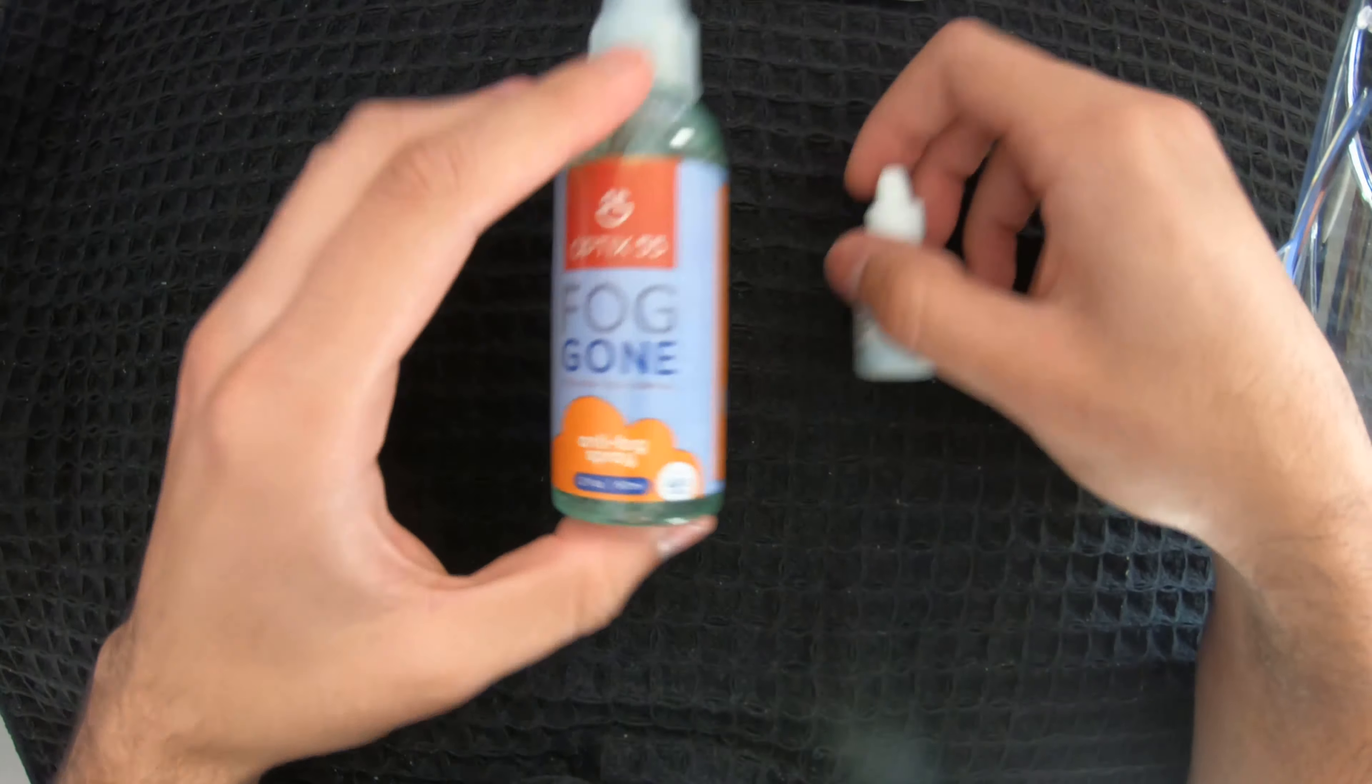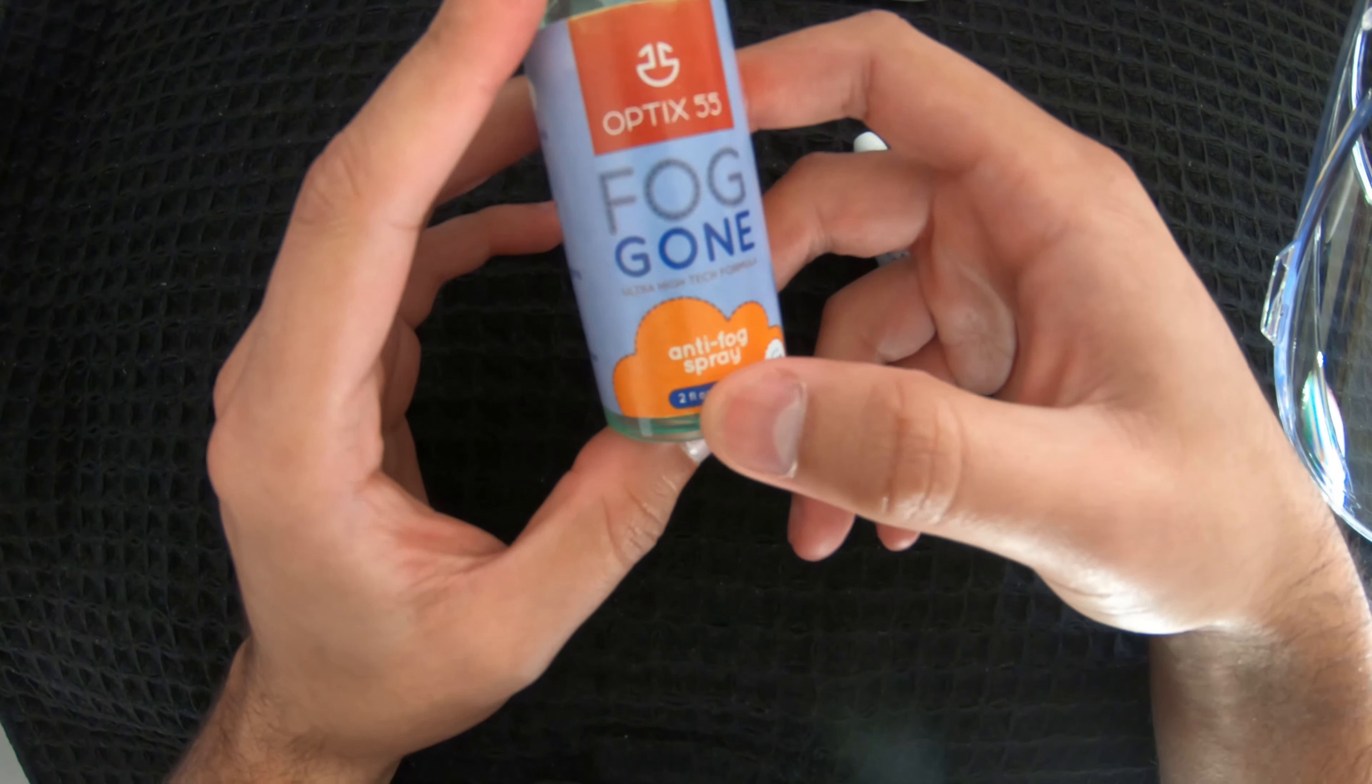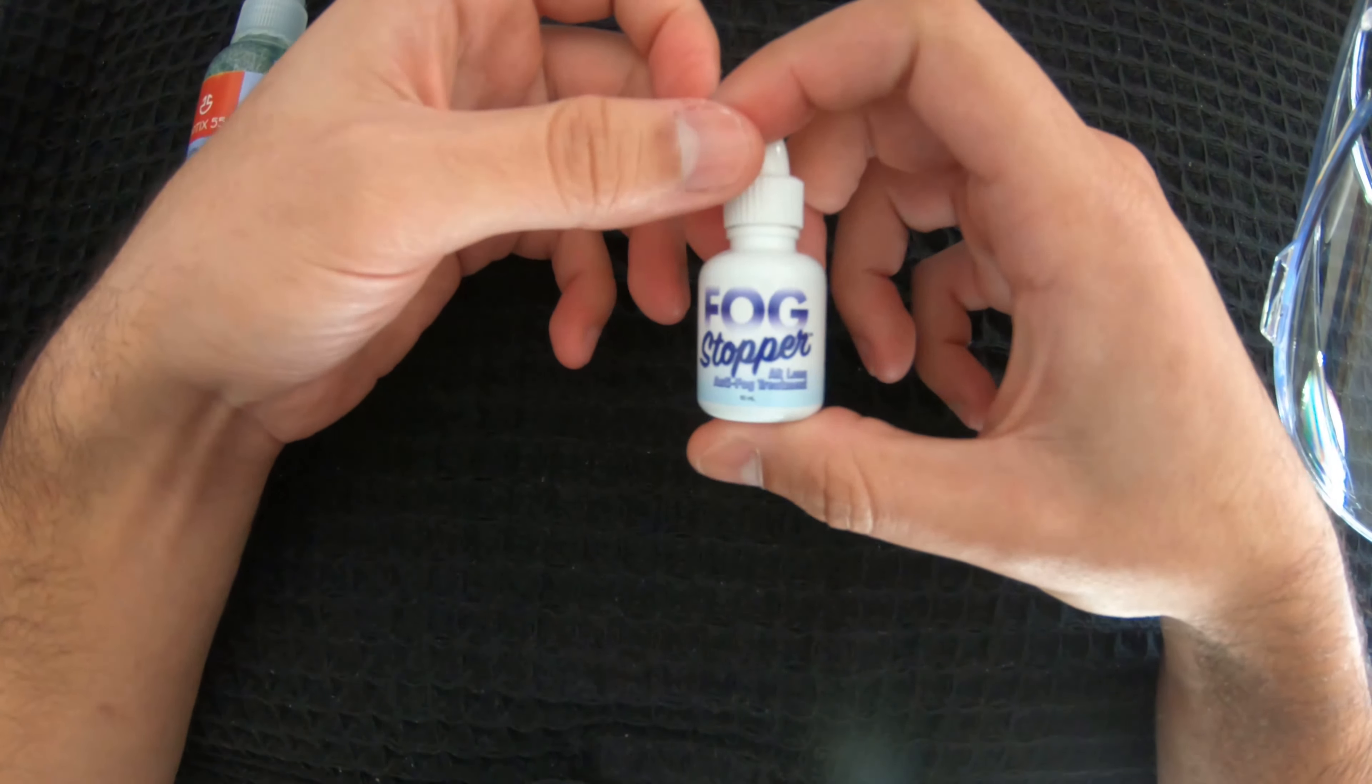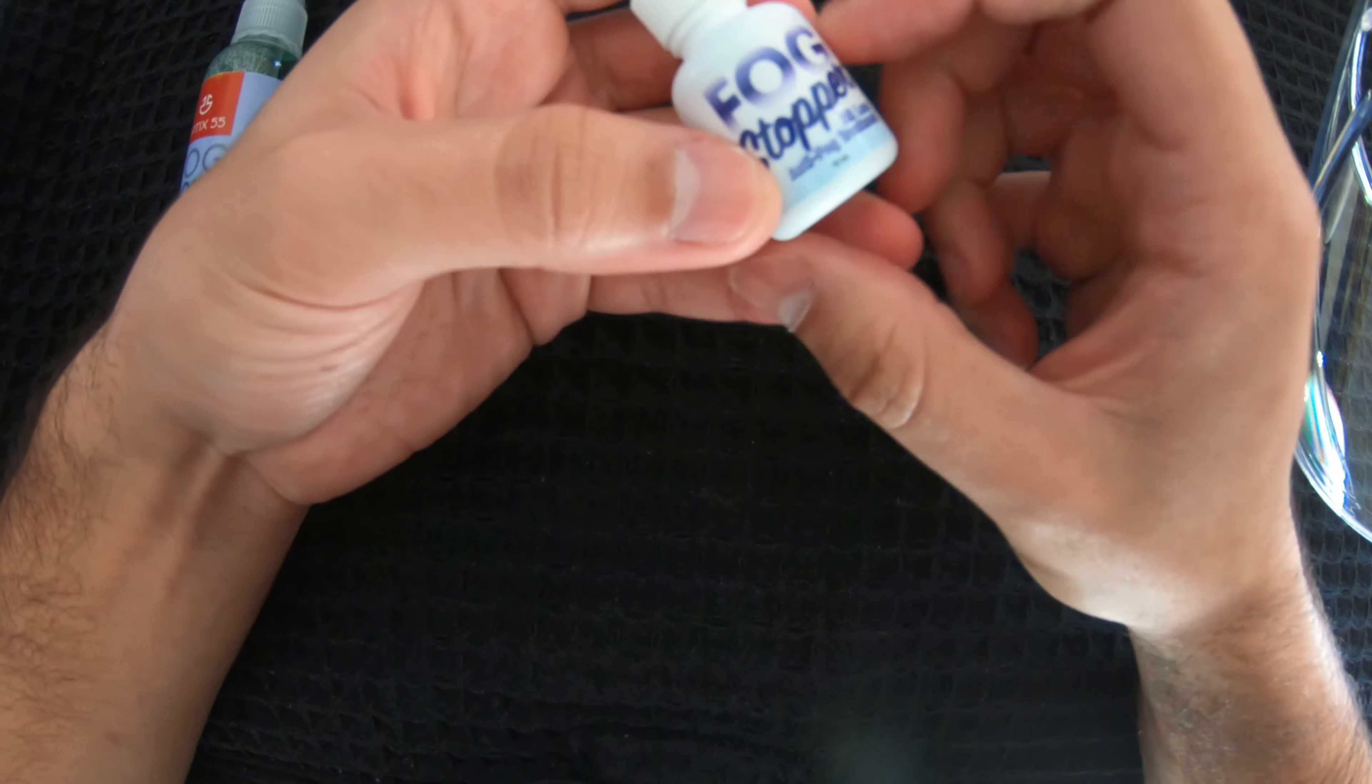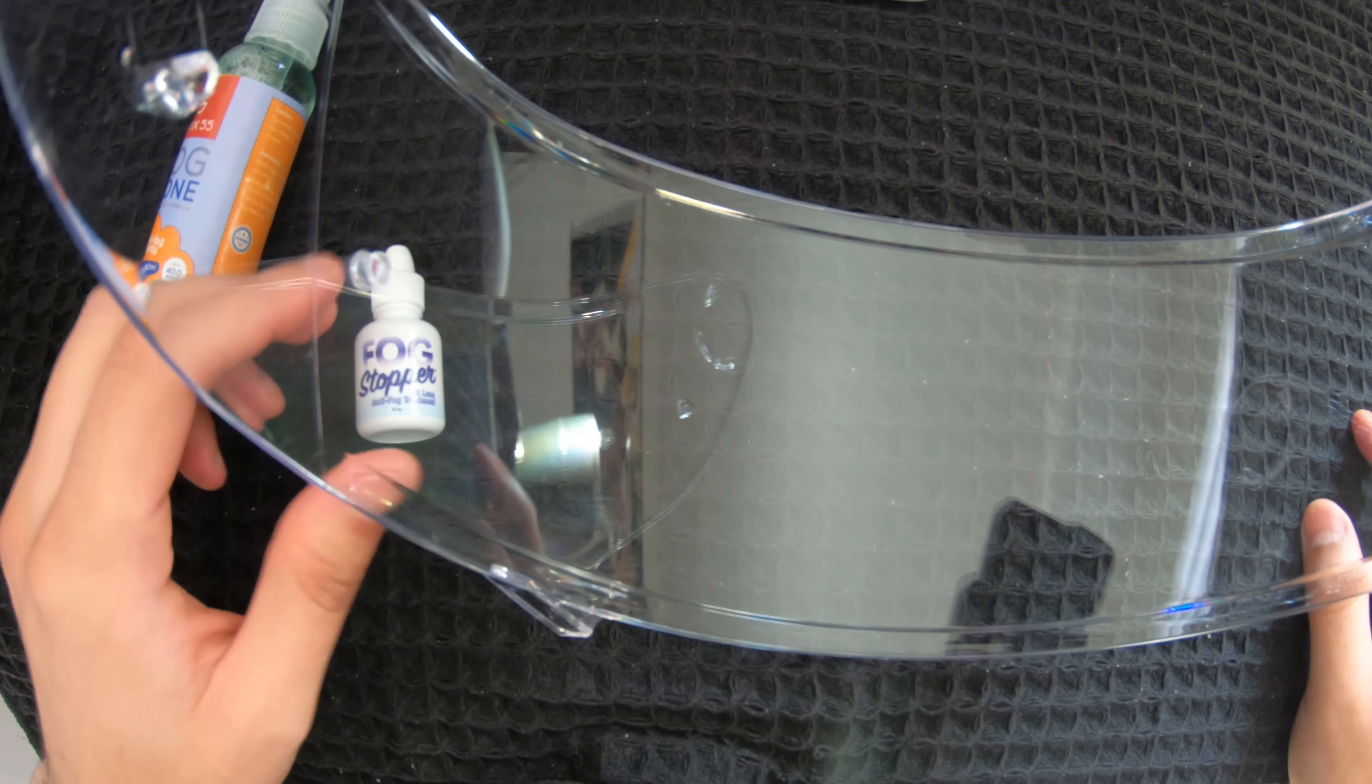So first, we have Fog Gone, which is the first product I tried. You can get it for about $11. It's two ounces or 60 milliliters, and this is a spray bottle. The second product I have is Fog Stopper, and this is more expensive at $19, and you only get 10 milliliters, and it is a dropper style bottle. So now we're going to start to talk about how to apply each of these products.